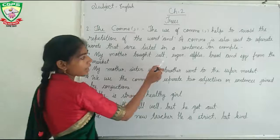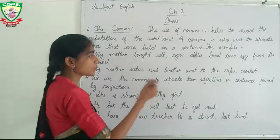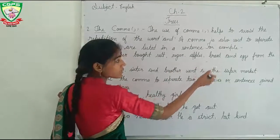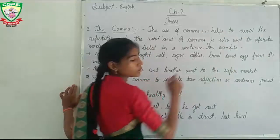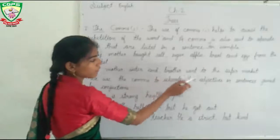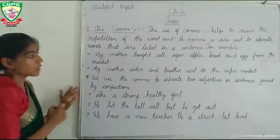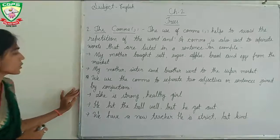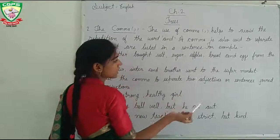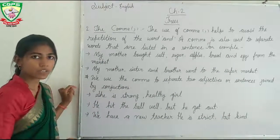In this sentence, salt, sugar, apple, and bread are separated by commas. We use the comma to separate items in a list. We also use the comma to separate two adjectives in a sentence.